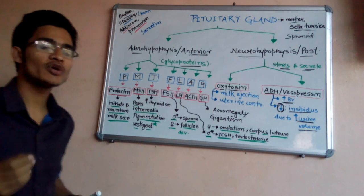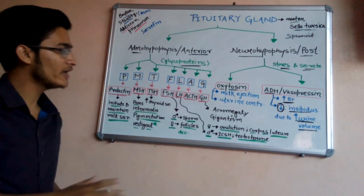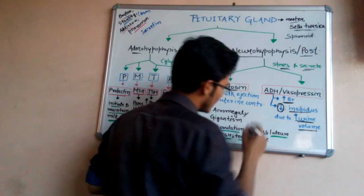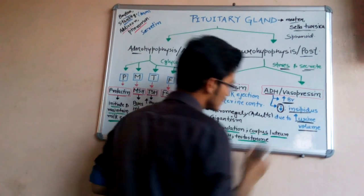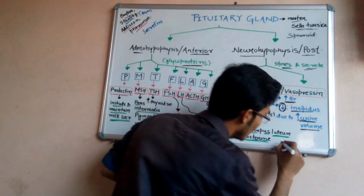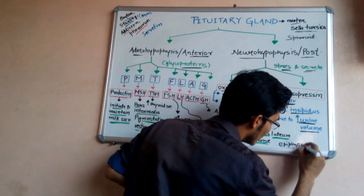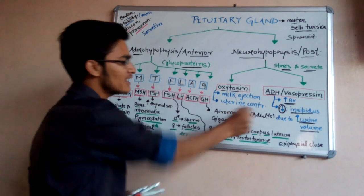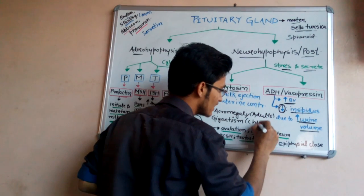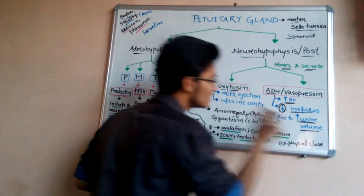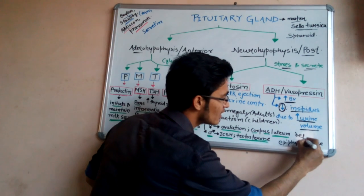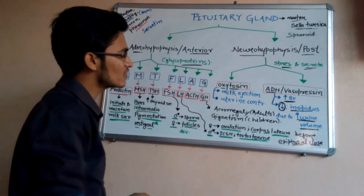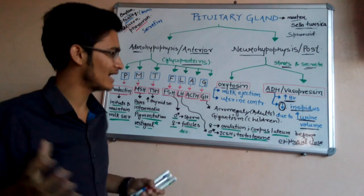G stands for GH, the growth hormone, which is responsible for the normal growth of a person. If it shows deviation, it causes two types of disease. Acromegaly occurs in adults — after epiphyseal closure. Gigantism occurs in children — before epiphyseal closure. In both diseases, the size of the limbs gets enlarged.